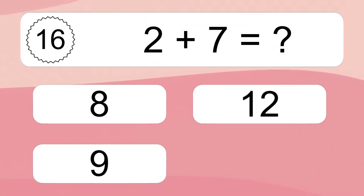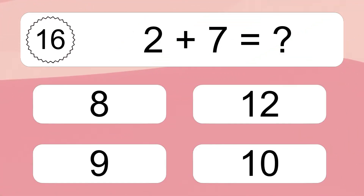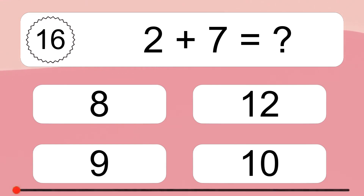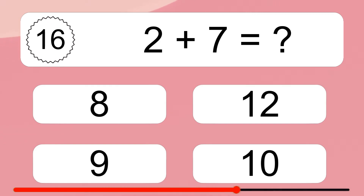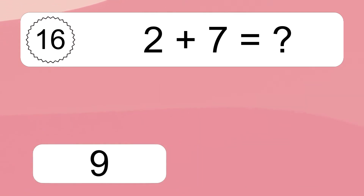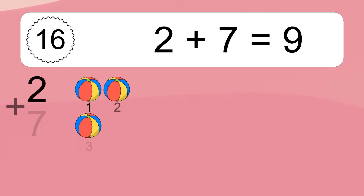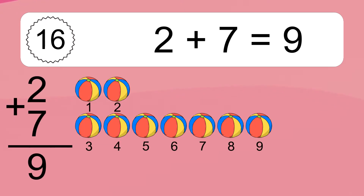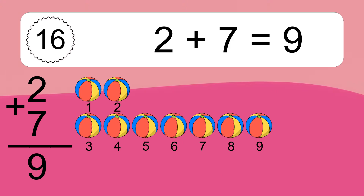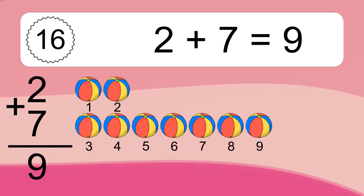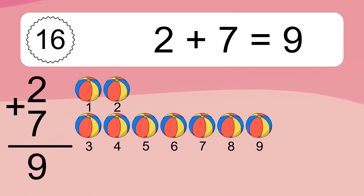2 plus 7 equals what? 2 plus 7 equals 9. Let's count it: 1, 2, 3, 4, 5, 6, 7, 8, 9.